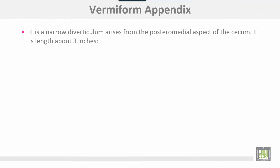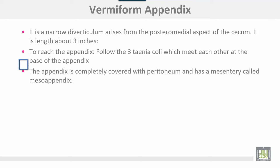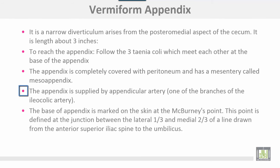Vermiform appendix. It is a narrow diverticulum arising from the posteromedial aspect of the cecum. Its length is about three inches. To reach the appendix, follow the three taenia coli which meet each other at the base of the appendix. The appendix is completely covered with peritoneum and has a mesentery called the mesoappendix. The appendix is supplied by the appendicular artery, which is a branch of the ileocolic artery.